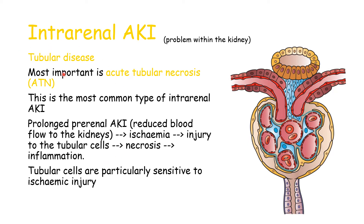Next we have tubular disease. The most important is acute tubular necrosis, the most common type of intrarenal AKI. It is due to prolonged pre-renal AKI — reduced blood flow to the kidney for a prolonged period leads to ischemia and injury to the tubular cells, which will die through necrosis and inflammation. Without enough blood going into the glomerulus, there is less blood supply to the tubular cells, which are particularly sensitive to ischemia — and that is acute tubular necrosis.